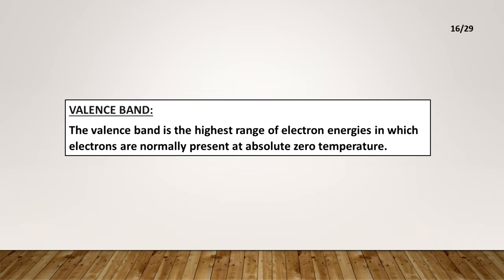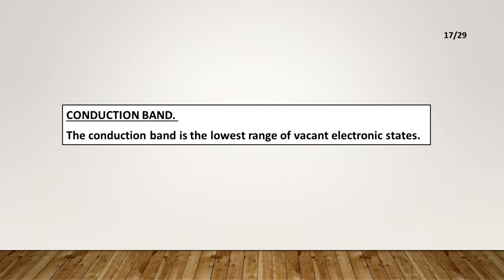Valence band: The valence band is the highest range of electron energies in which electrons are normally present at absolute zero temperature. Conduction band: The conduction band is the lowest range of vacant electronic states.